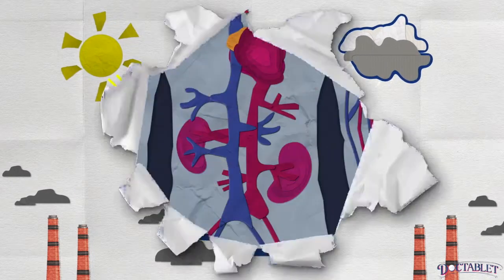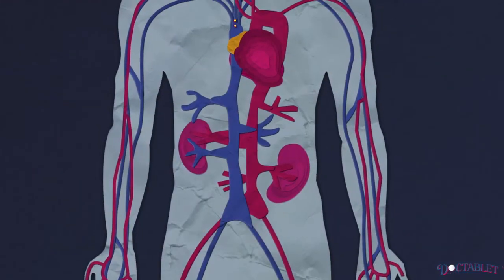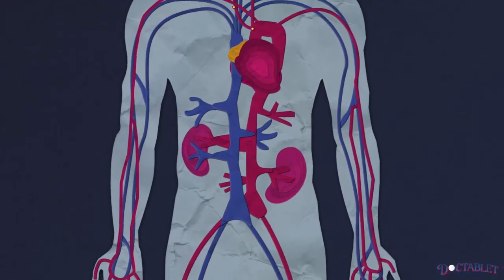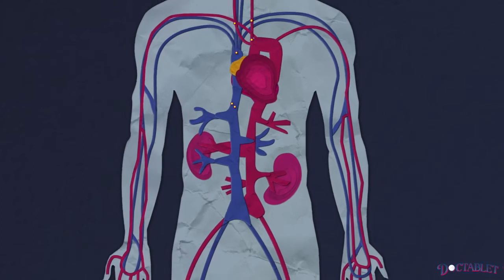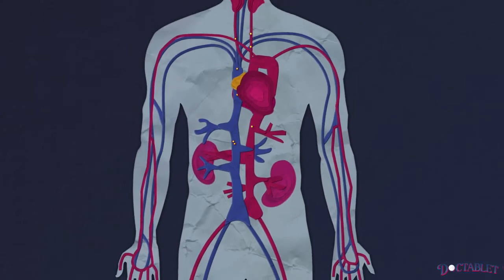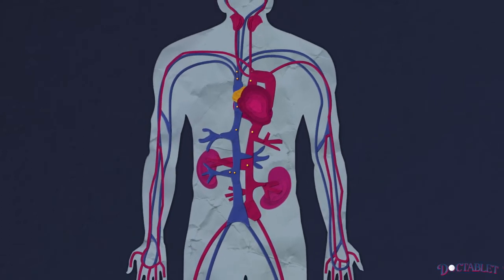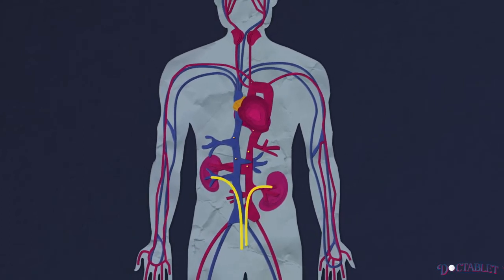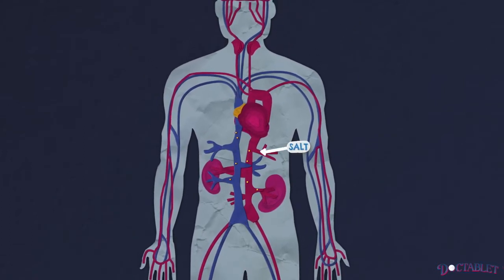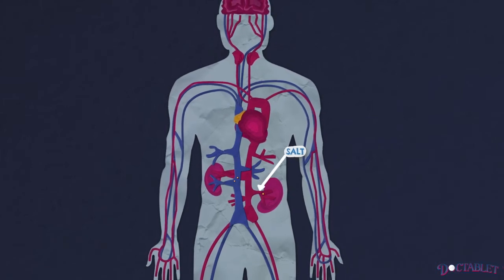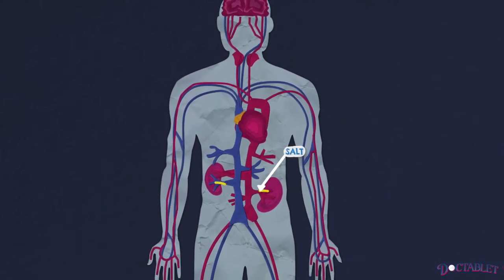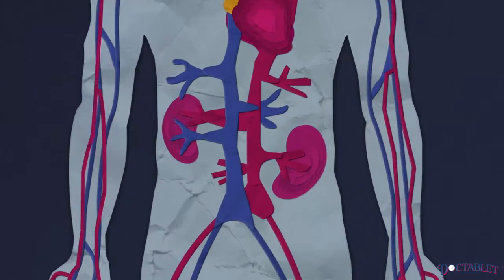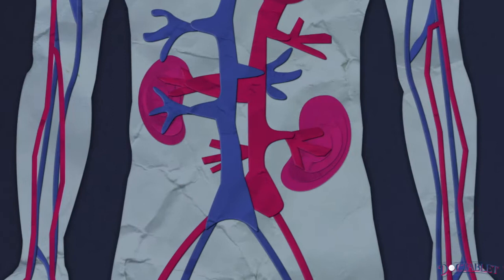Our kidneys are responsible for removing excess water from the body. They do this by very delicate mechanisms that sense the salt we have within us and stimulate the kidney to remove it when we urinate.